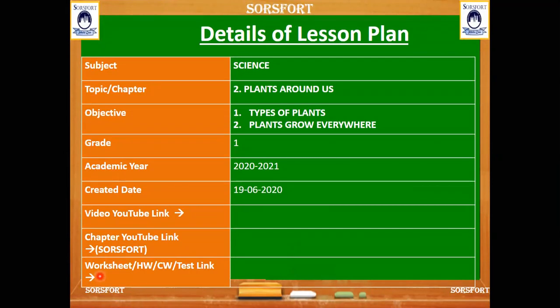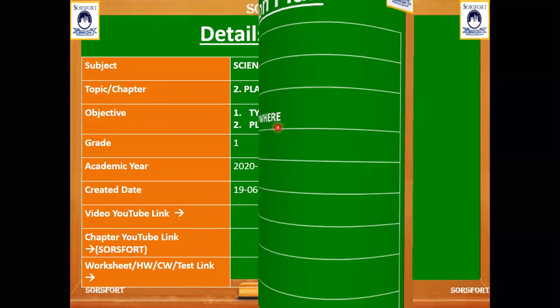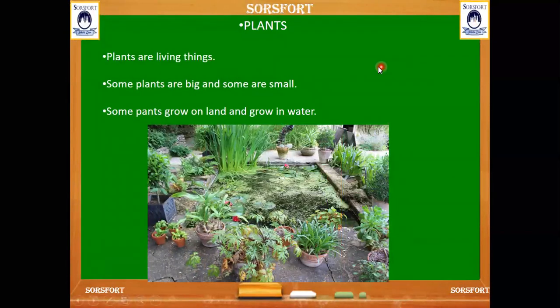Hello students, today we are going to start Science subject, Chapter 2: Plants Around Us, third topic, which includes types of plants and plants grow everywhere. Welcome to the Source for Learning session — one of the leading names that helps students in their life goals through schooling, sports, and life skills. Now let's see about plants.